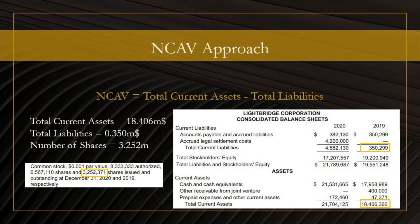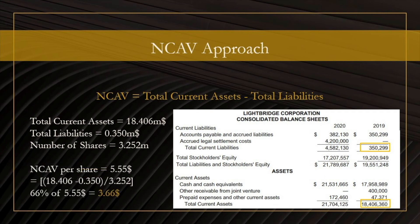Let us look at a particular example to see how this strategy can be applied. Here we'll be looking at a company called Lightbridge Corporation, a nuclear fuel technology development company focusing on addressing the world's climate and energy needs. The first step is to compute the company's NCAV, done by taking the total current assets and subtracting total liabilities. The total current assets amount to $18.4 million, and total liabilities equal total current liabilities at $0.35 million. Using these two numbers, we compute the NCAV. The next step is to compute NCAV per share, for which we also need the number of shares outstanding. At the end of 2019, the company had 3.25 million shares outstanding. Combining all of that, we compute the NCAV per share to be $5.55.